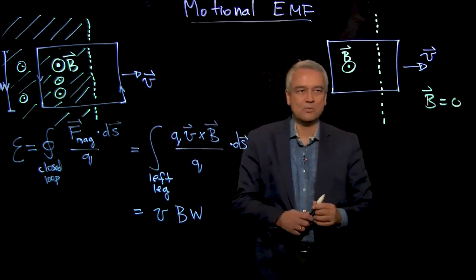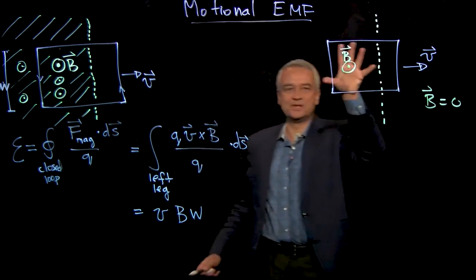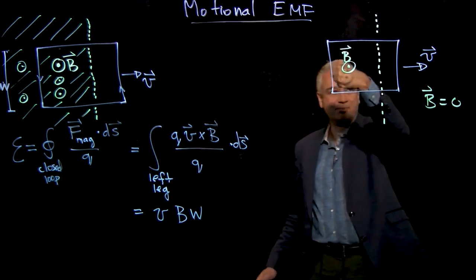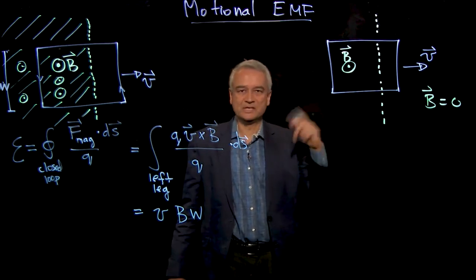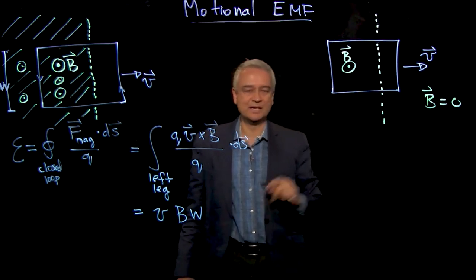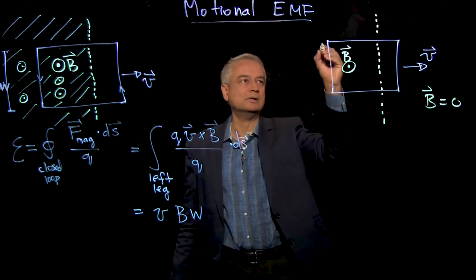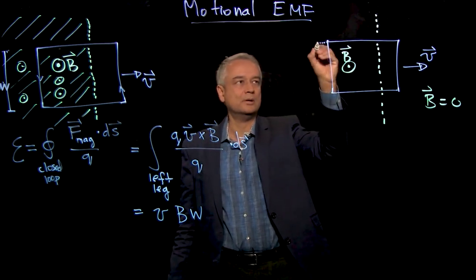About what happens to the flux through this loop as I'm pulling it, as it's moving. Delta - this is where the loop is now, but a time Delta T ago the loop was back here.